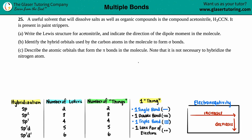Number 25. A useful solvent that will dissolve salts as well as organic compounds is the compound acetonitrile, which is H3C-CN. It is present in paint strippers. Letter A: write the Lewis structure for acetonitrile and indicate the direction of the dipole moment in the molecule.